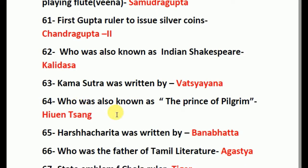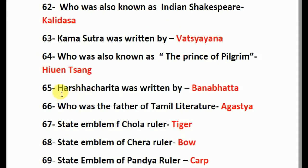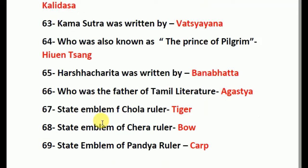Who was also known as the Chinese Pilgrim? The answer is Hiuen Tsang. Harsha Charita was written by Bana Bhatta. Who was the father of Tamil literature? Agastya. State emblem of Chola rulers: Tiger. State emblem of Chera rulers: Bow. State emblem of Pandya rulers: Carp.